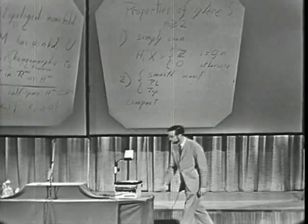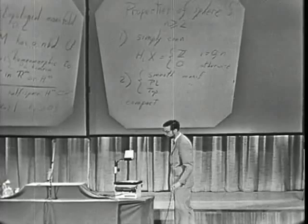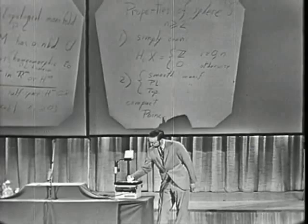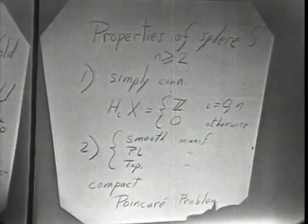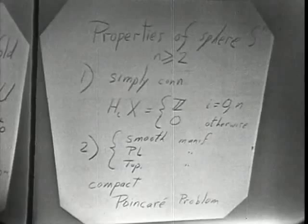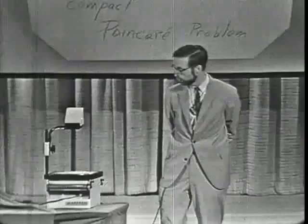The problem I want to formulate is what I'll call the Poincaré conjecture problem. It's the question of whether these properties, which I've listed, are sufficient to characterize the sphere among all objects in the given category. In the smooth case, the question is: if we have a smooth manifold which has the homotopy type of a sphere, does it follow that it's actually diffeomorphic to a sphere?